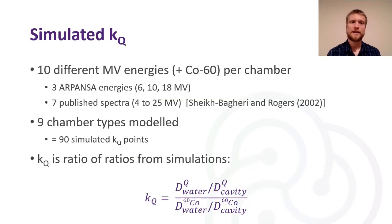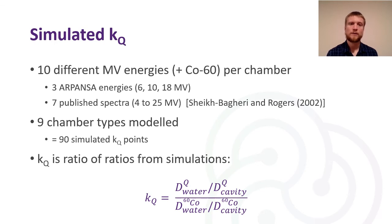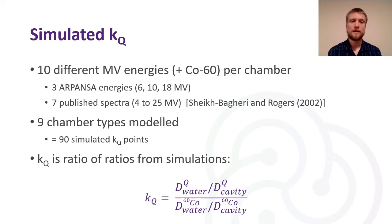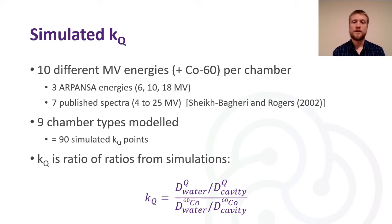For the simulated KQ values, we calculated 10 different MV energies plus Cobalt-60 for each chamber. These 10 come from three different ARPANSA energies in a full LINAC model — that's 6, 10, and 18 MV — as well as seven published spectra in a range of energies from 4 to 25 MV. We modelled nine different chamber types, so 10 different MV energies across nine chambers gives us 90 simulated KQ data points. The KQ value is the ratio of dose to water over dose to cavity in beam quality Q, divided by the dose to water over dose to cavity in Cobalt-60.